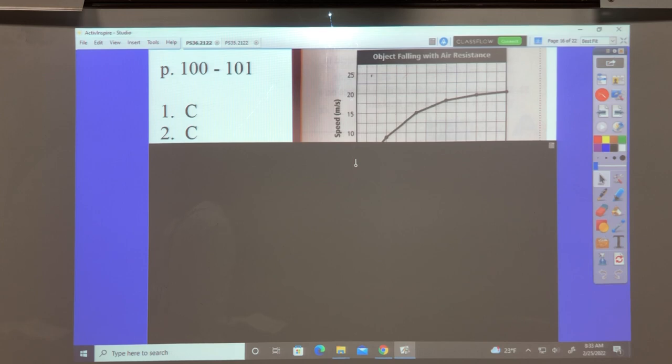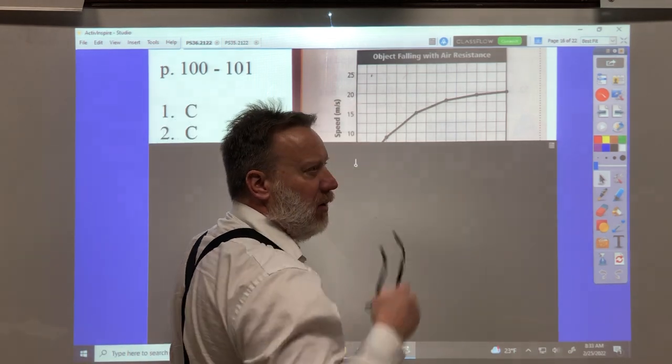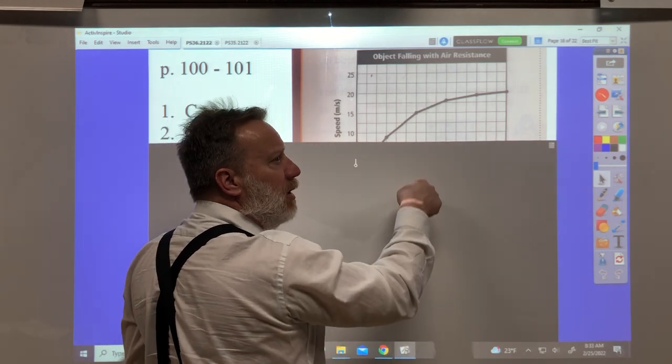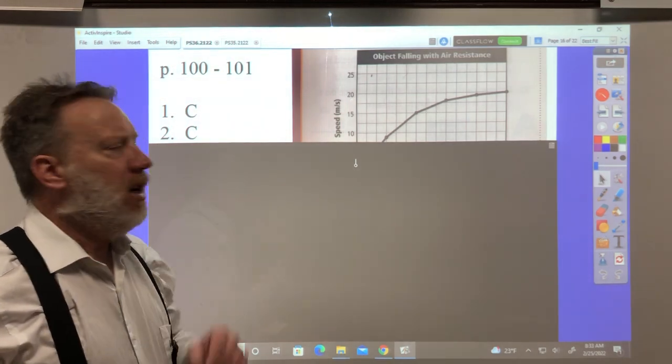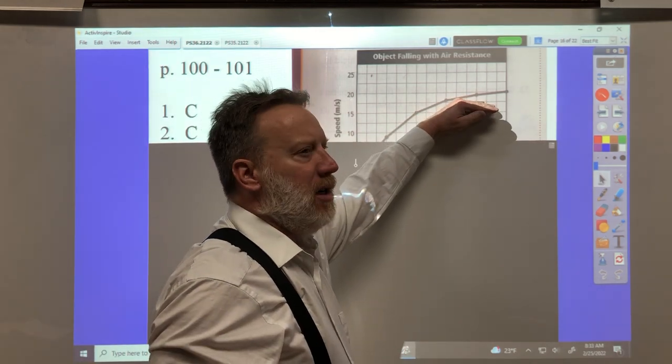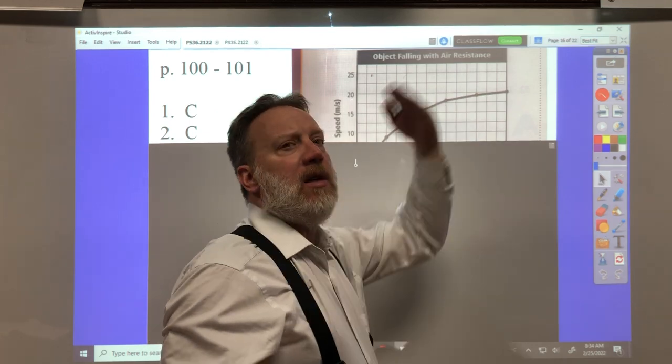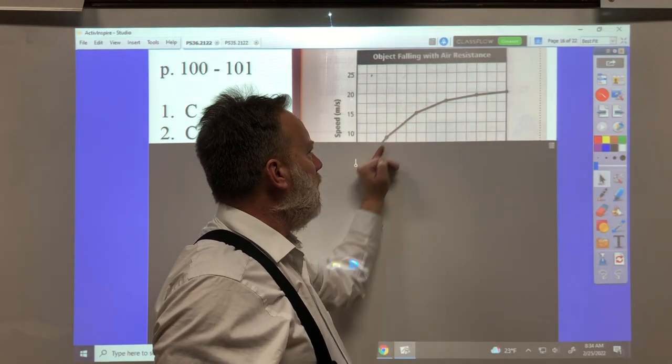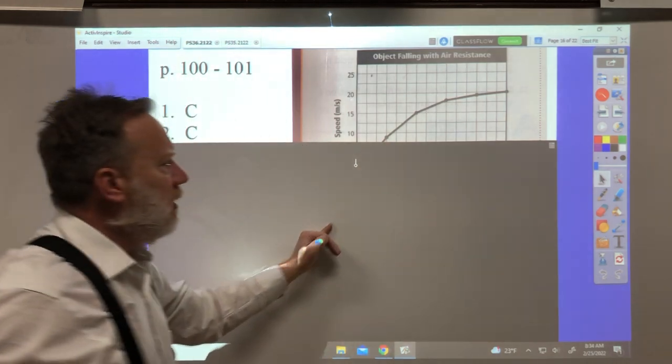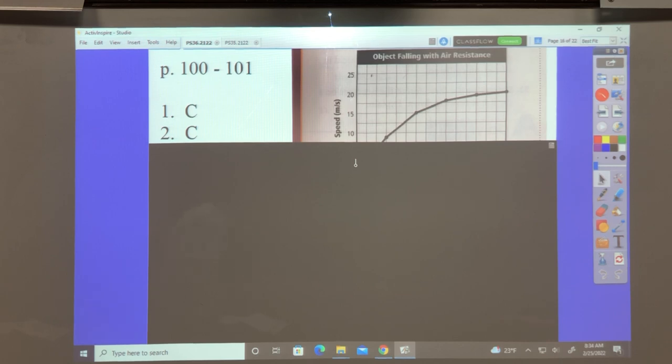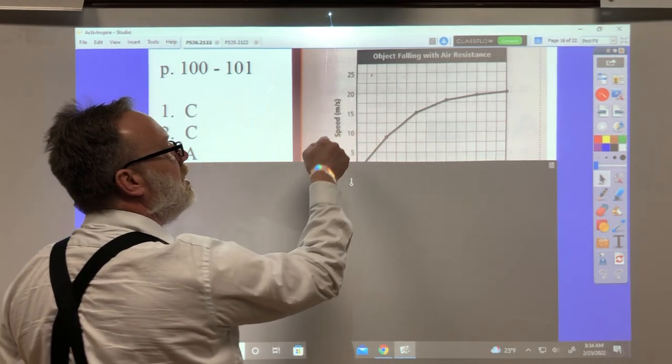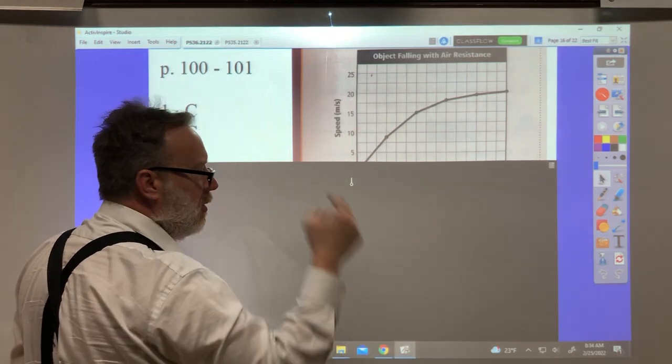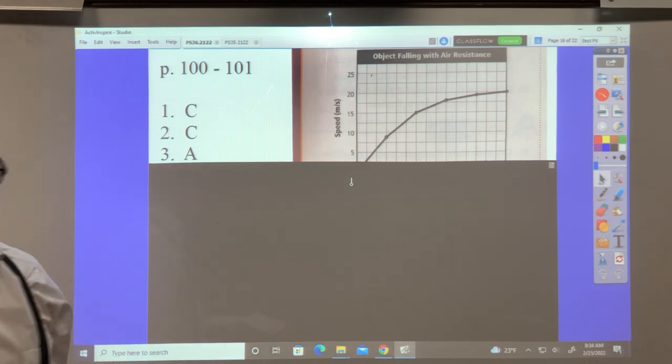Number three, over which of the following time intervals is the acceleration of the object the greatest? Well this is a speed versus time graph or actually you could call it a velocity versus time graph because this object's falling straight down. And the acceleration is how much it's getting faster. The part that's getting the greatest increase in speed over a time interval is where the slope is steepest. So the acceleration is highest during that first interval time from zero to one. So the answer for three should be a, from zero to one. That's the steepest acceleration. So on a speed time graph or velocity time graph, the acceleration is the one with the greatest slope.